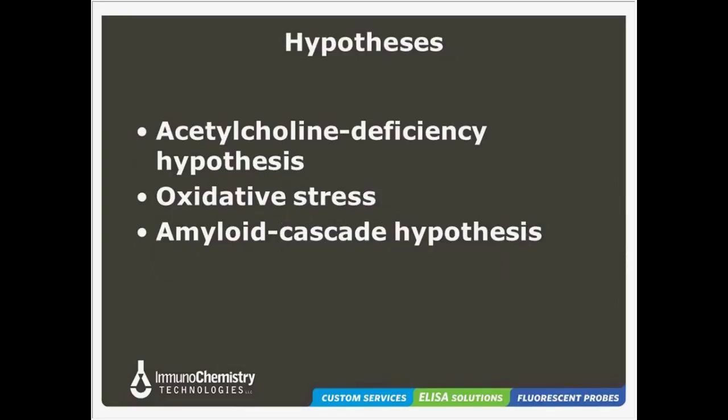While we still don't know exactly what causes this specific pathology, there are several different hypotheses researchers are pursuing in the quest for developing a treatment. The acetylcholine deficiency hypothesis is based upon the associated decrease of acetylcholine synthesis in Alzheimer's disease, which is a neurotransmitter necessary for memory and cognition function. This was initially a very popular hypothesis and drove drug development to treat this deficiency. However, to date, these treatments have not proven to be very effective, so other hypotheses are being pursued.